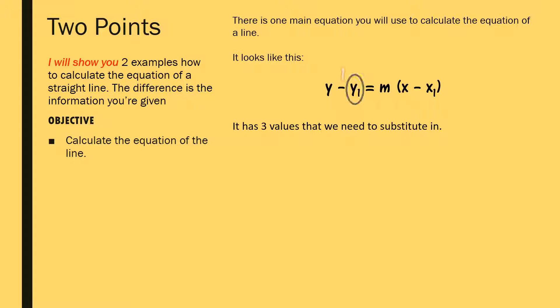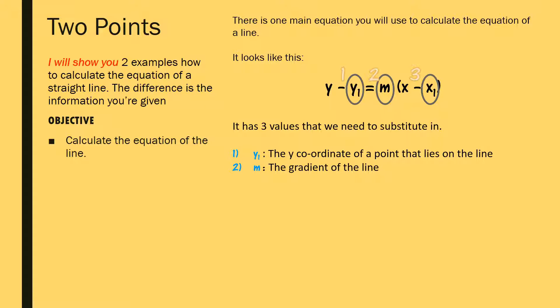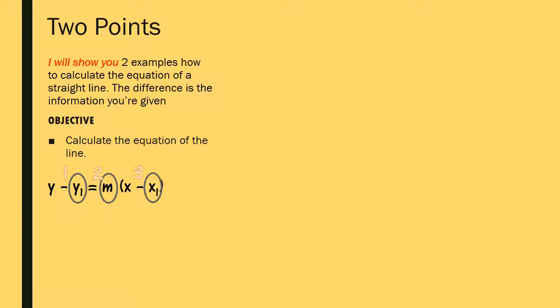The equation has three values to substitute in. The first is y1: the y-coordinate of a point that lies on the line. The second is m: the gradient of the line we're trying to calculate. And x1 is the x-coordinate of a point that lies on the line. In some cases these will be given directly in the question; in other cases we'll have to calculate them first.